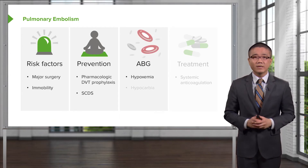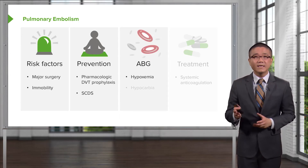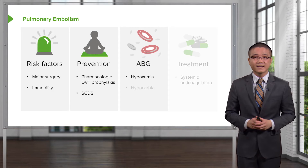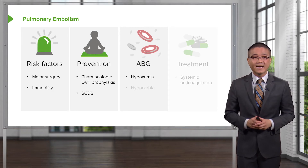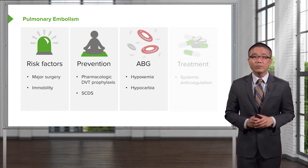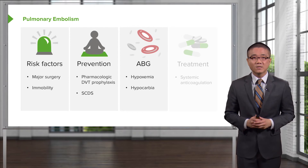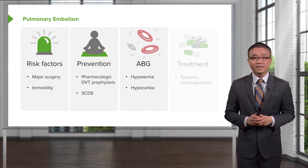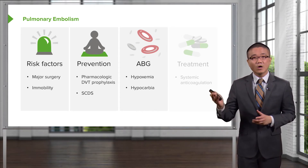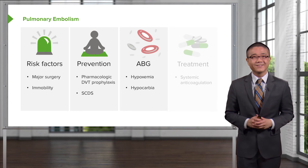Diagnosis of pulmonary embolism may be aided by getting an arterial blood gas. On an arterial blood gas, we generally demonstrate hypoxia, but very importantly, hypocarbia. That's because most patients with pulmonary embolism also hyperventilate, causing a reduction in the CO2.